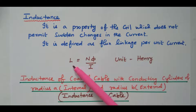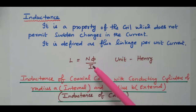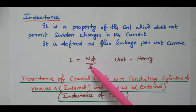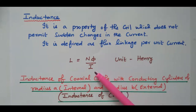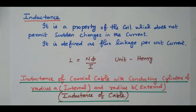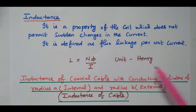This inductance is based on three parameters: number of turns in the coil, flux linking with the coil, and current flowing through the coil — Nφ by I. The unit is Henry.